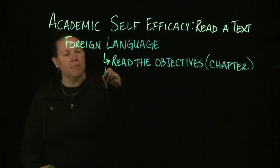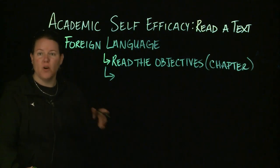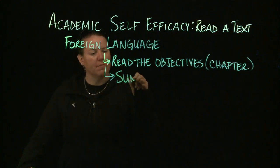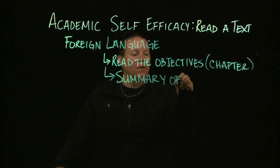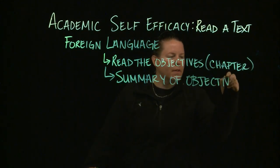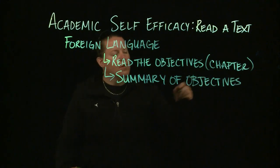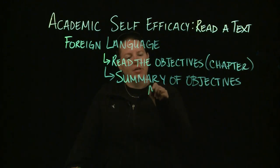Then you're going to flip to the back because the back of each chapter has those objectives over again with a summary of what was talked about for each of them. So you're going to read the summary of the objectives—what was talked about in the chapter and what was the important stuff at the back of the chapter.